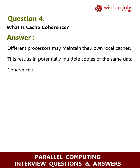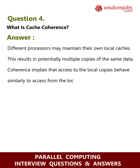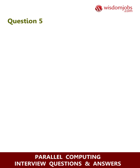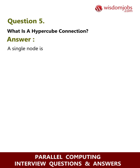Cache coherence implies that access to the local copies behaves similarly to access from a single copy, apart from the time to access. Question 5: What is a hypercube connection? Answer: A single node is a hypercube.